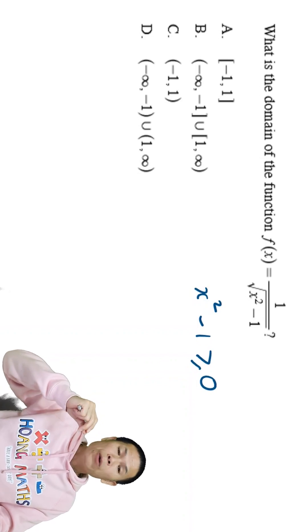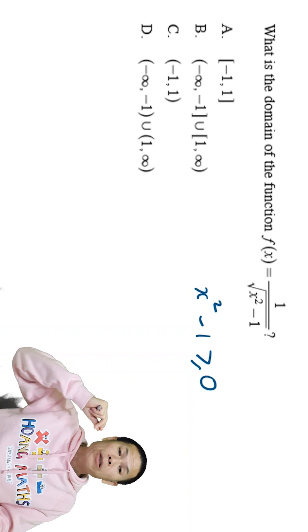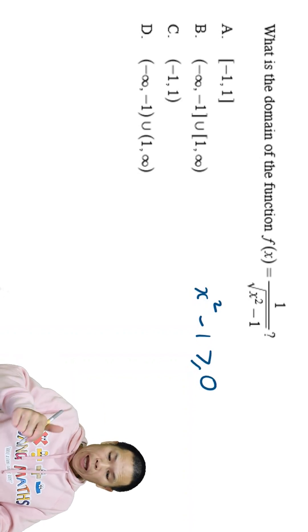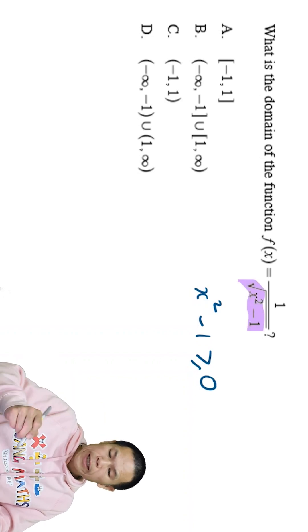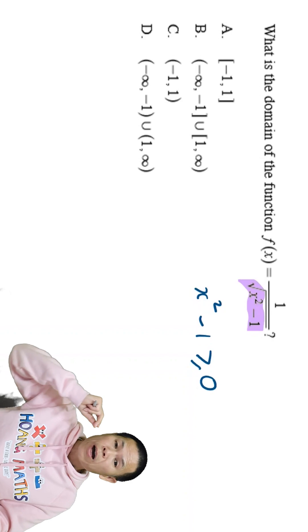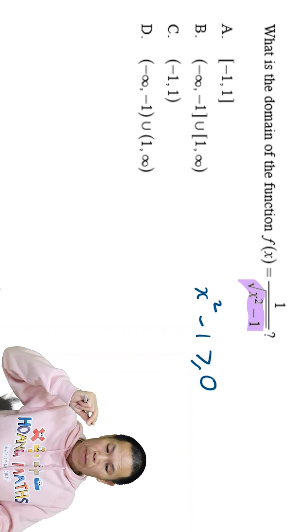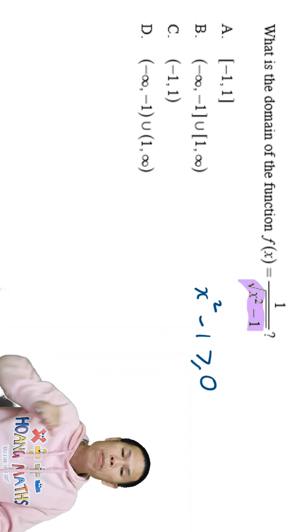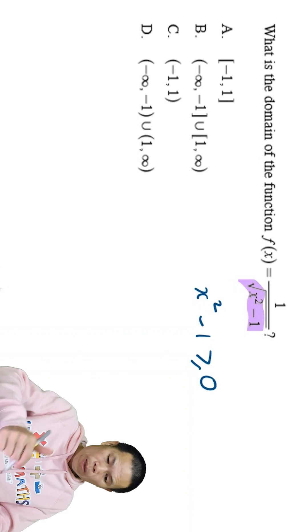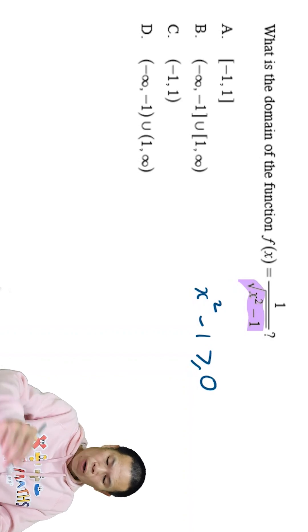But then if we have x squared minus 1 equal to zero, that means the denominator here is zero. So we cannot divide by zero because one divided by square root of x squared minus 1.